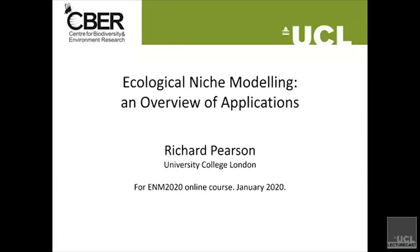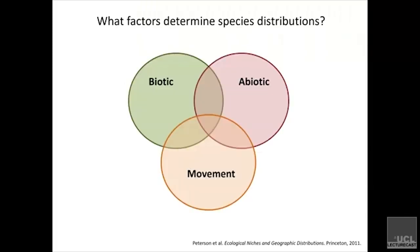Hi everybody, this is Richard Pearson based at University College London. I'm an ecologist and my task is to provide a brief overview of some of the main applications of ecological niche models for the ENM 2020 online course. I know elsewhere in the course you'll be covering this in a lot more detail, but let's start with some of the basic theory behind what we're trying to do — which is to ask: how can we model distributions?